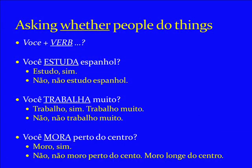We'll start with the simplest type of question — just asking people whether they do things or not. It's a simple yes or no question. The formula is: você plus the verb. For example, você estuda espanhol? Estudo sim. That's how we answer — we conjugate the verb in the present tense. Estudo sim. Or não — não estudo espanhol.